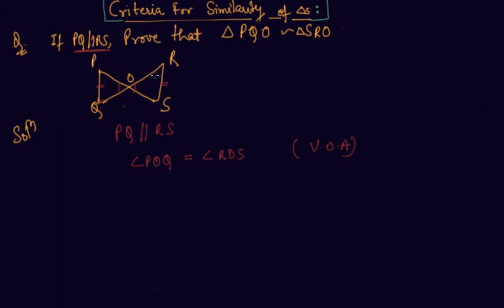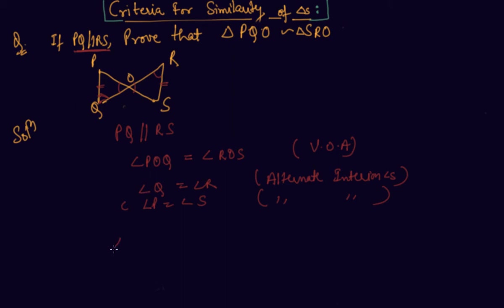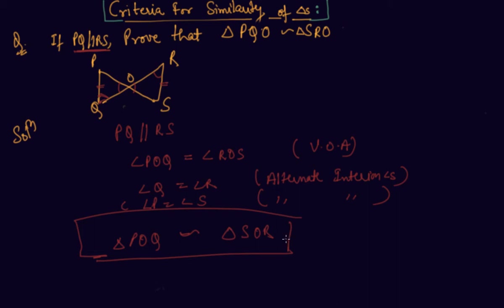Since the two lines are parallel, angle Q equals angle R — alternate interior angles — and angle P equals angle S for the same reason. So if all the angles of the two triangles are equal, I can directly say that triangle POQ is similar to triangle SOR by Angle-Angle-Angle similarity.